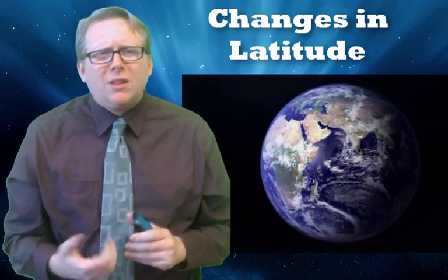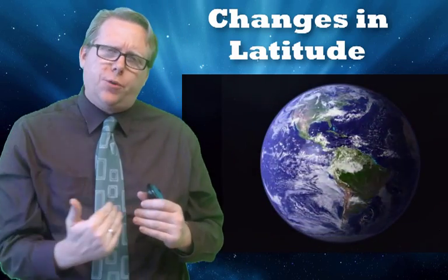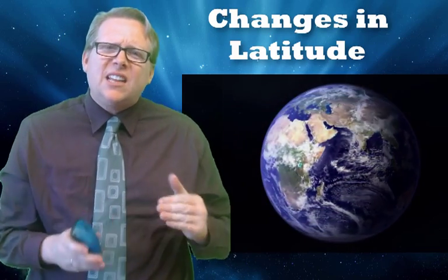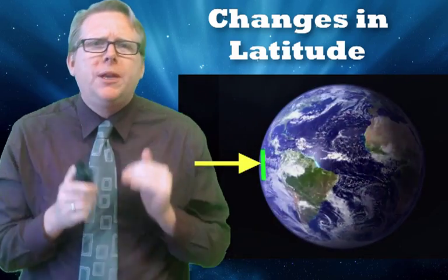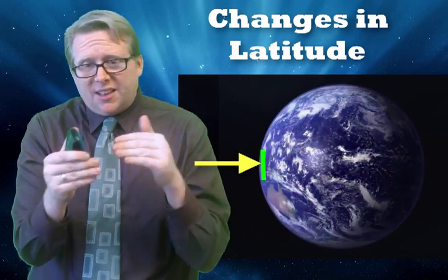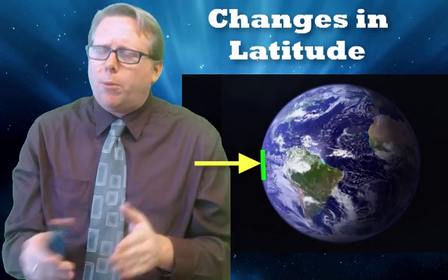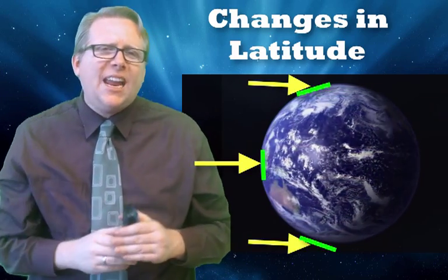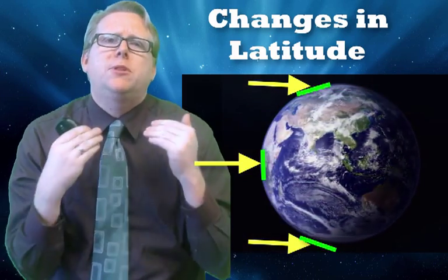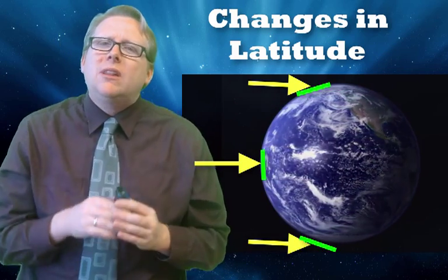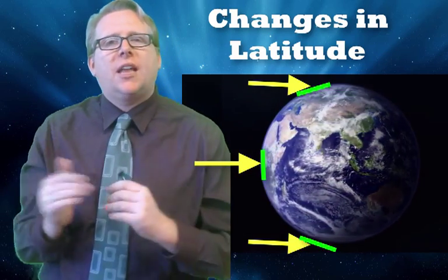How does latitude really affect our planet? What latitude does is — the further from the equator you go — it changes the angle of the sunlight. If you're at the equator, the sunlight is striking pretty much perpendicular to our planet, giving off a lot more heat. So you can expect the center of our planet to be warmer. Whereas if you go towards the poles, the angle gets sharper, the sunlight comes in at more of an angle, and it's colder. So really, what latitude does is change the angle the sunlight hits our planet.